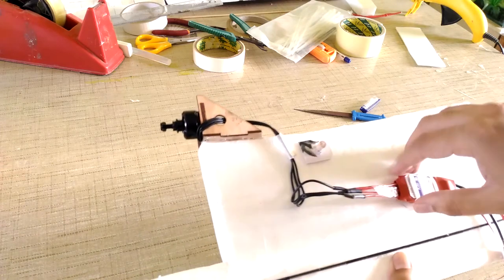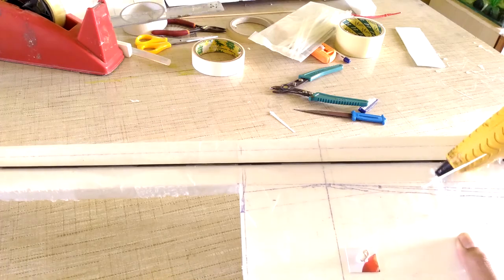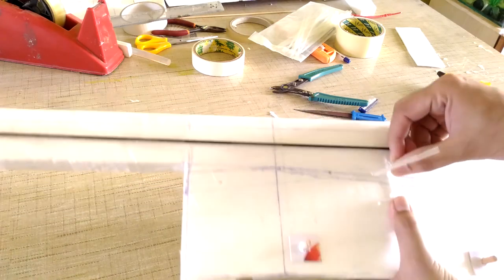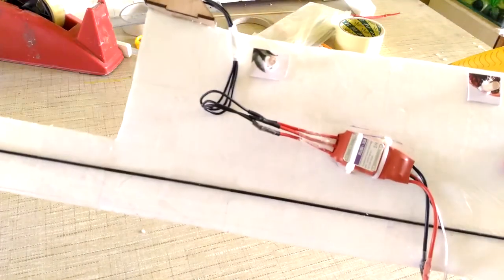So this is how the ESC is fitted and on the other side of the fuselage the ends of the zip ties are just hot glued on the fuselage itself and taped over. So this is how ESC is done.